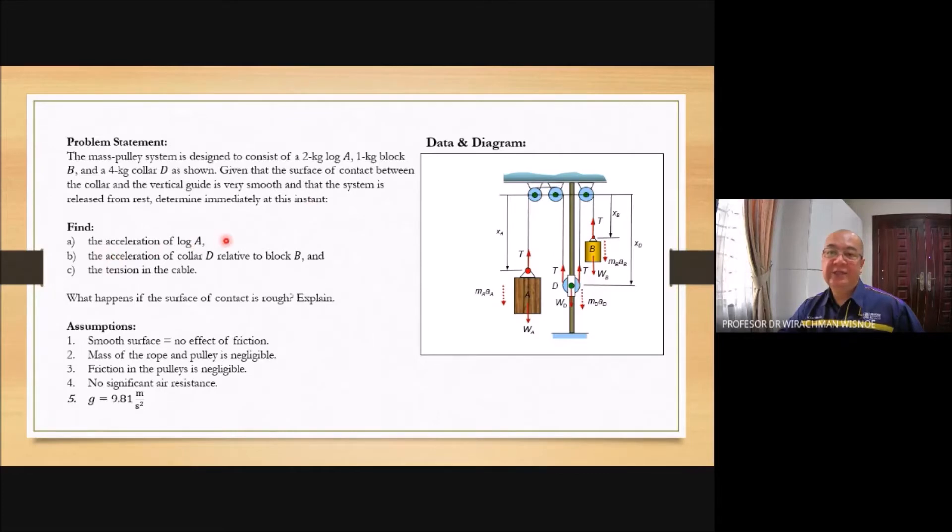determine immediately at this instant: A, the acceleration of log A; B, the acceleration of collar D relative to block B; and C, the tension in the cable. What happens if the surface of contact is rough? Explain.